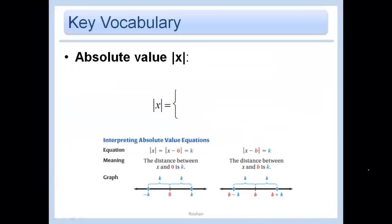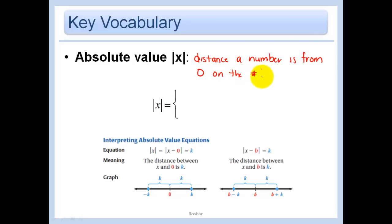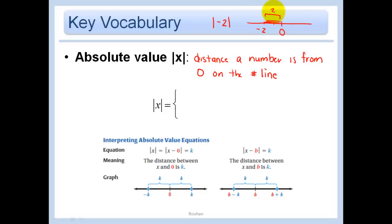When we talk about the absolute value of x, I want you to always be thinking the distance a number is from 0 on the number line. Distance is never negative, so absolute values can never be negative. The absolute value of negative 2 is just saying how far is negative 2 from 0 on the number line. Since it is 2 units away, the absolute value of negative 2 is 2.